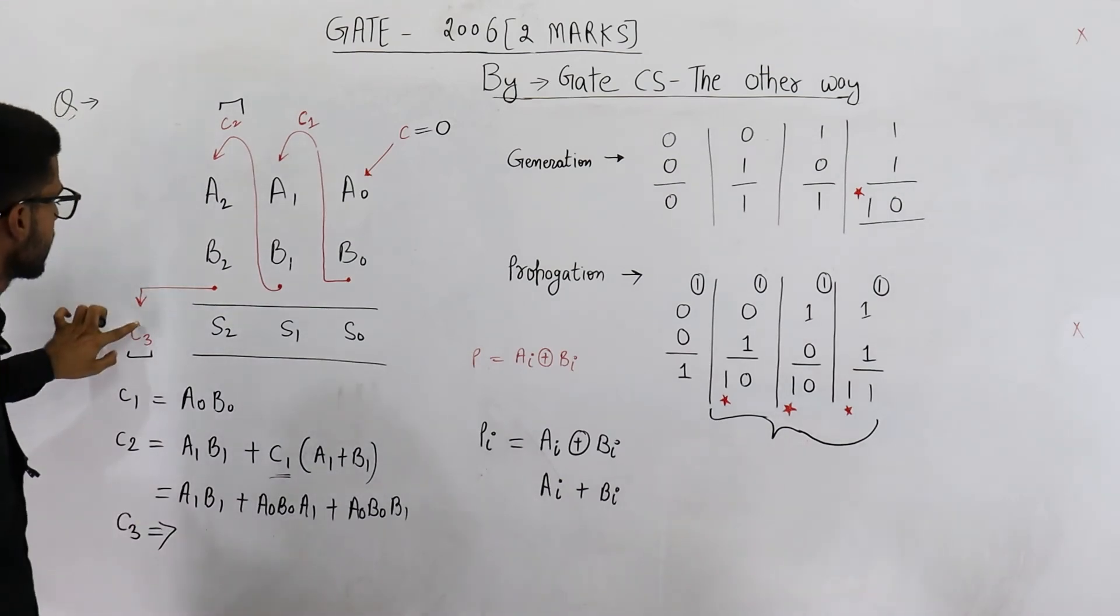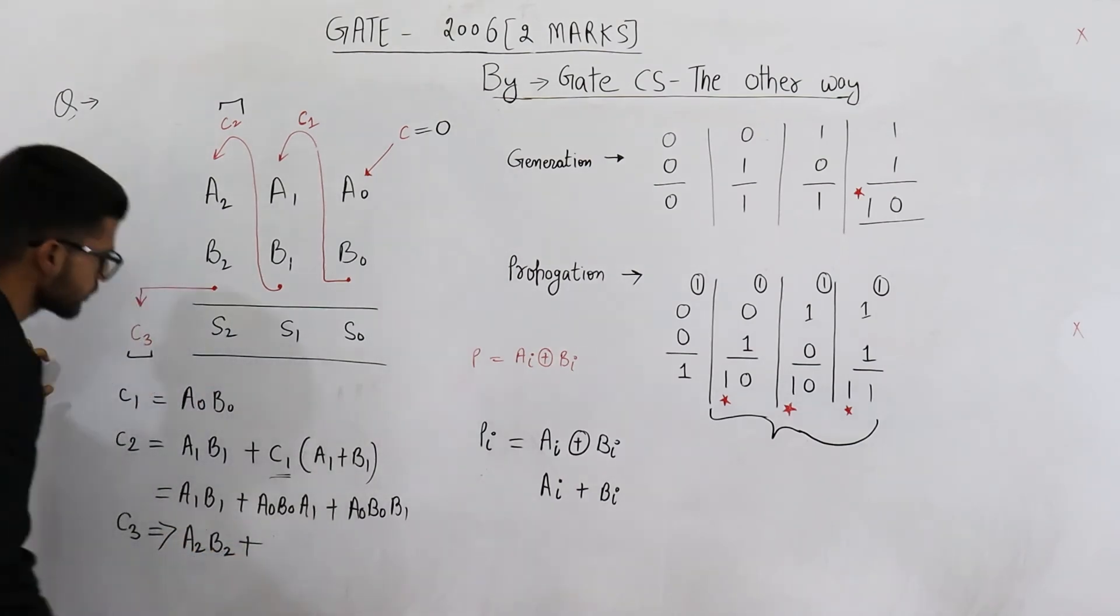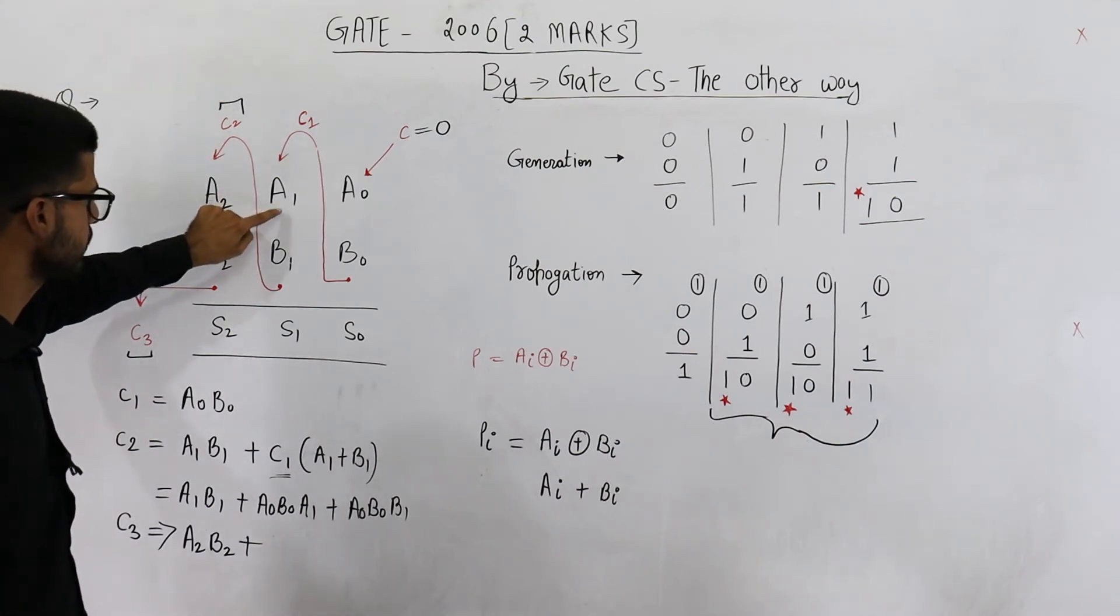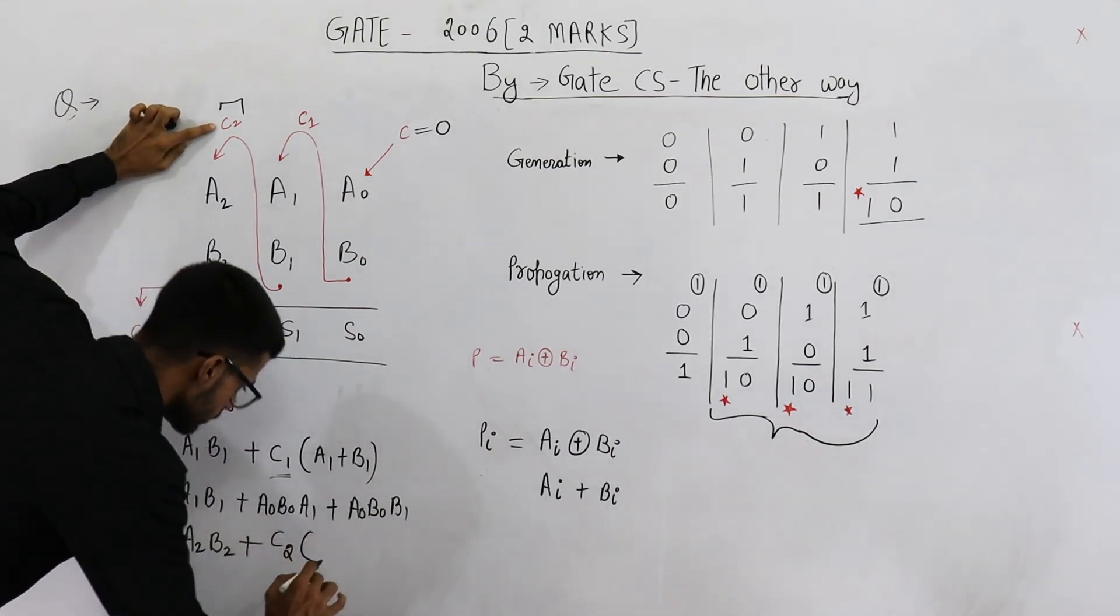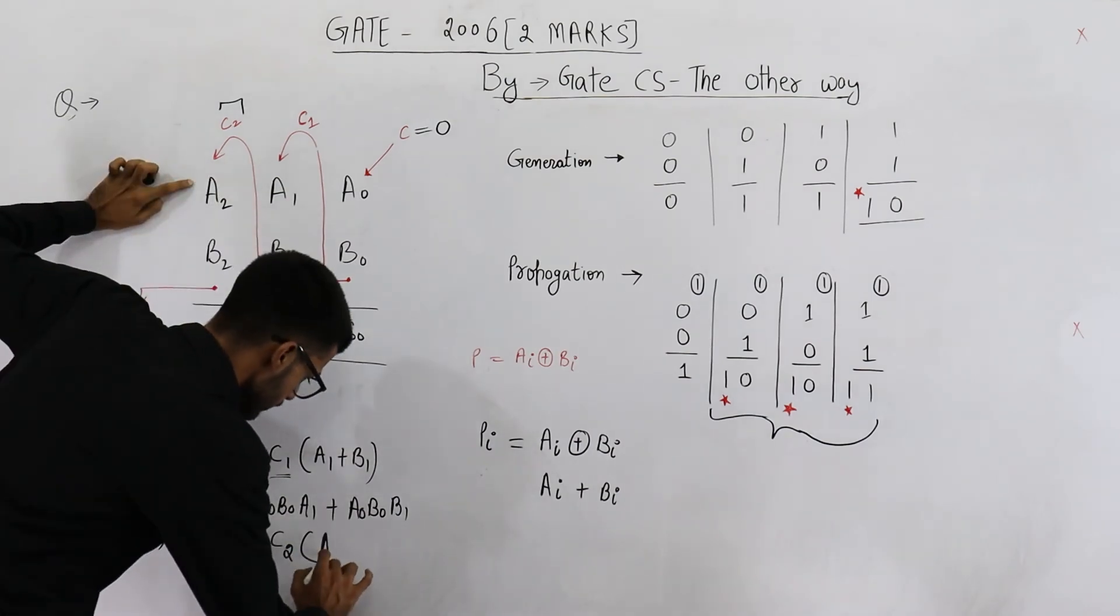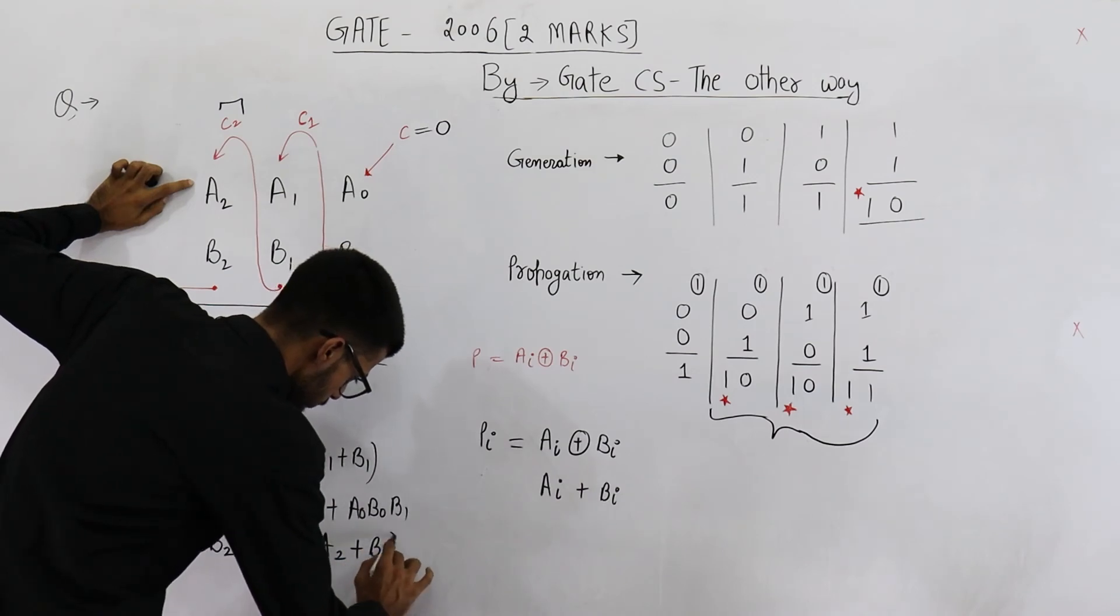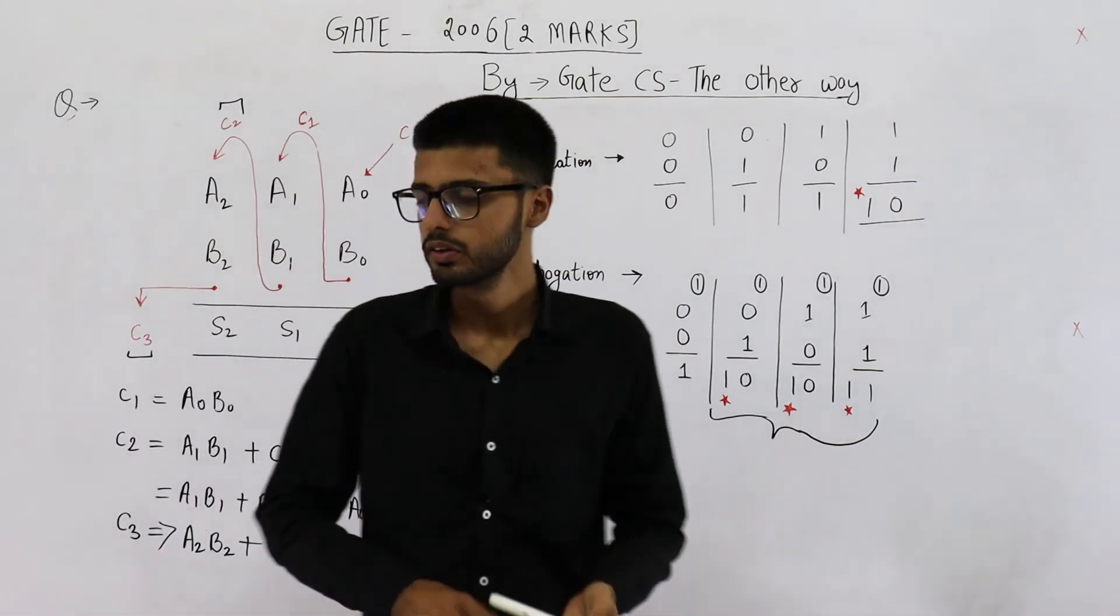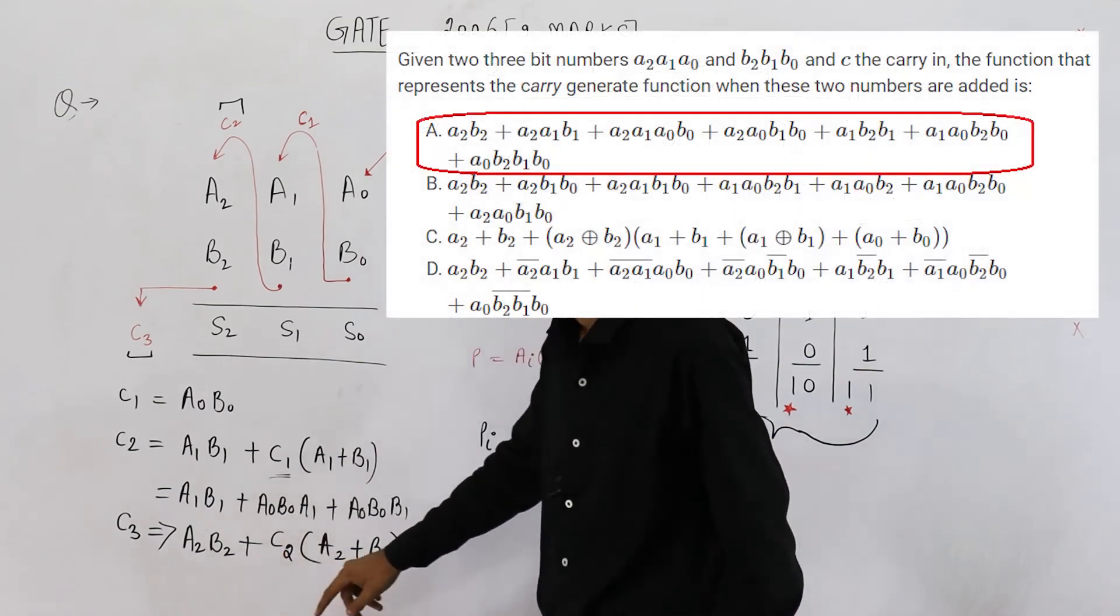Now let us calculate the value for C3. C3 will be either both of them are one and you generate a carry out. So that is A2 B2 plus other condition is carry from previous stage, that means carry from this stage which is C2, this was high. So it is C2 and any one of these two was high, A2 plus B2.